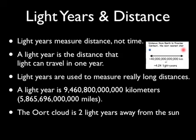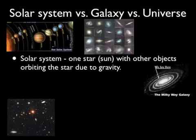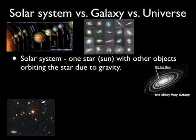Are you starting to think about the scale of our universe? Let's talk about solar systems versus galaxies versus the universe — they all fit together almost like nesting dolls. We start with the solar system: every solar system has one star. Ours is called the sun, and other objects orbit around that star due to gravity. There are tons of solar systems out there in our universe.